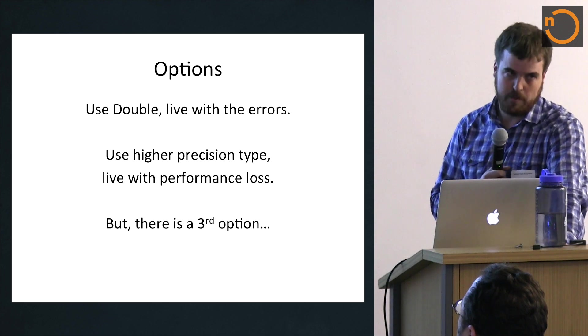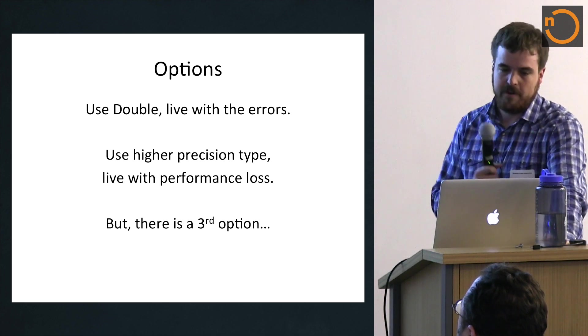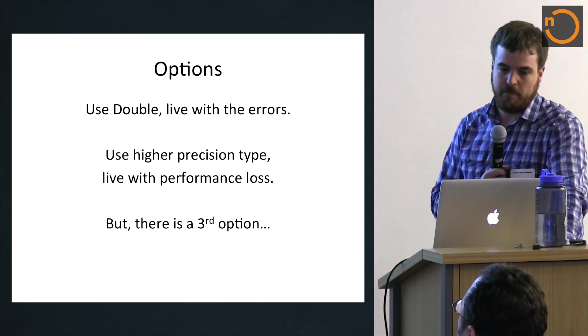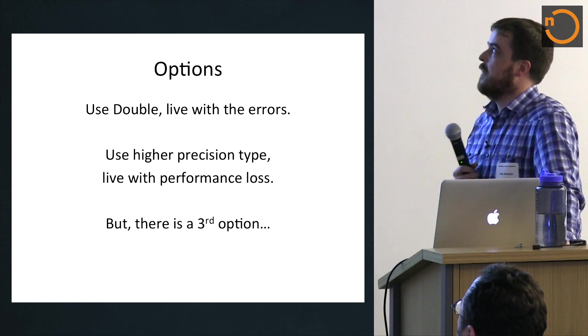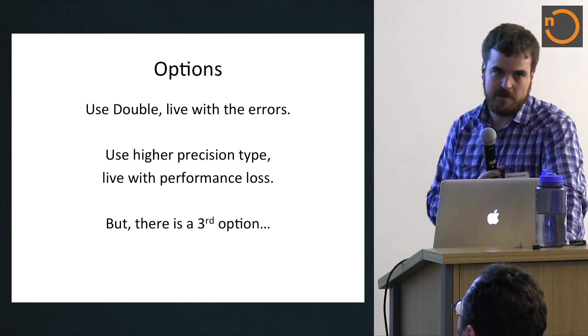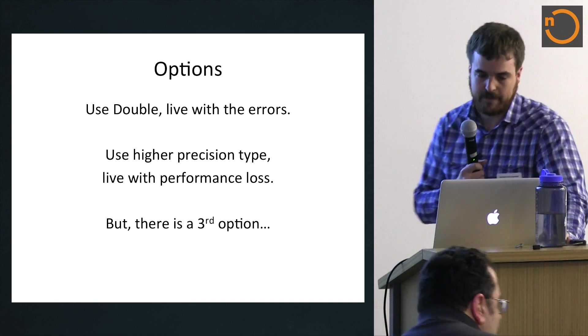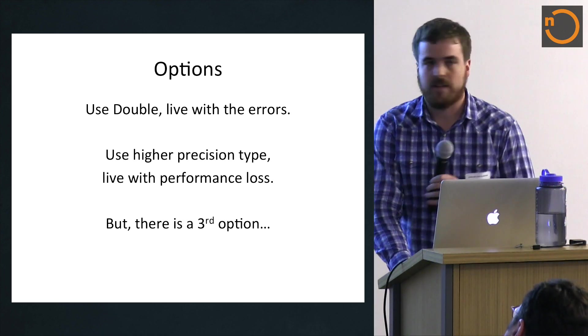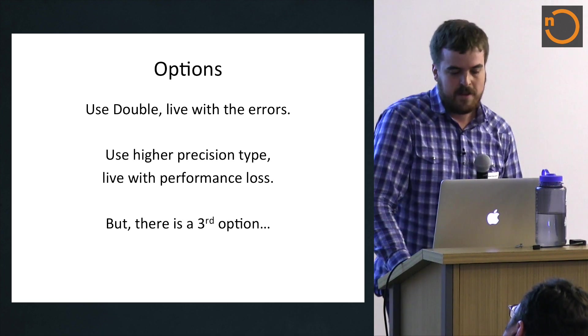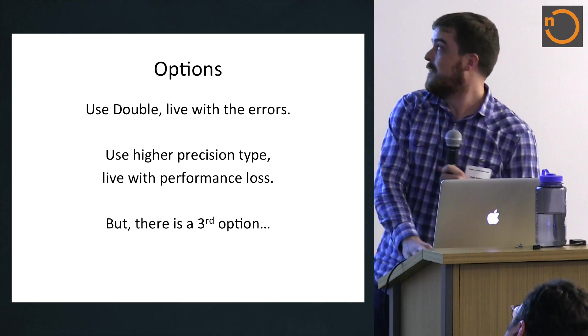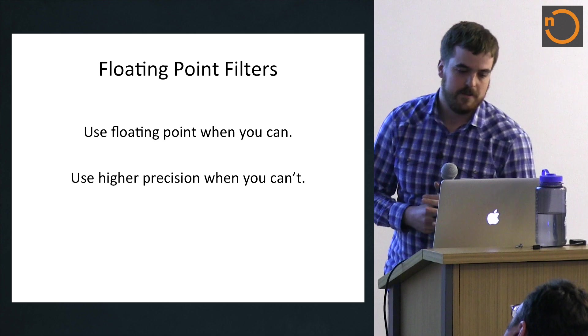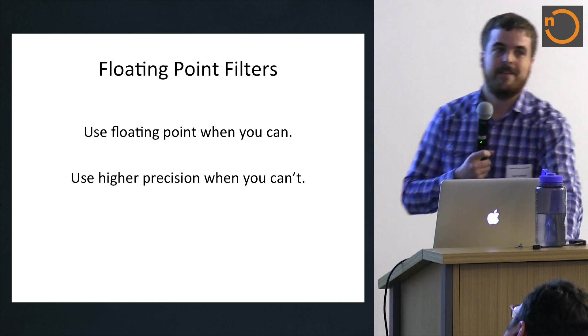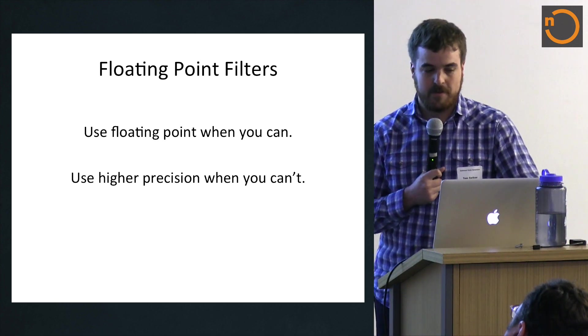You can continue using double like you were doing before. You live with the errors. This is probably the most common case, and everybody's generally happy with that. If you can't live with the errors, then you probably try to switch over to a higher precision type, like rational or big int or something like that. That's a fine option, but the problem is it's a lot slower than just using primitive doubles. But this talk is all about the third option, which is to use a floating point filter.